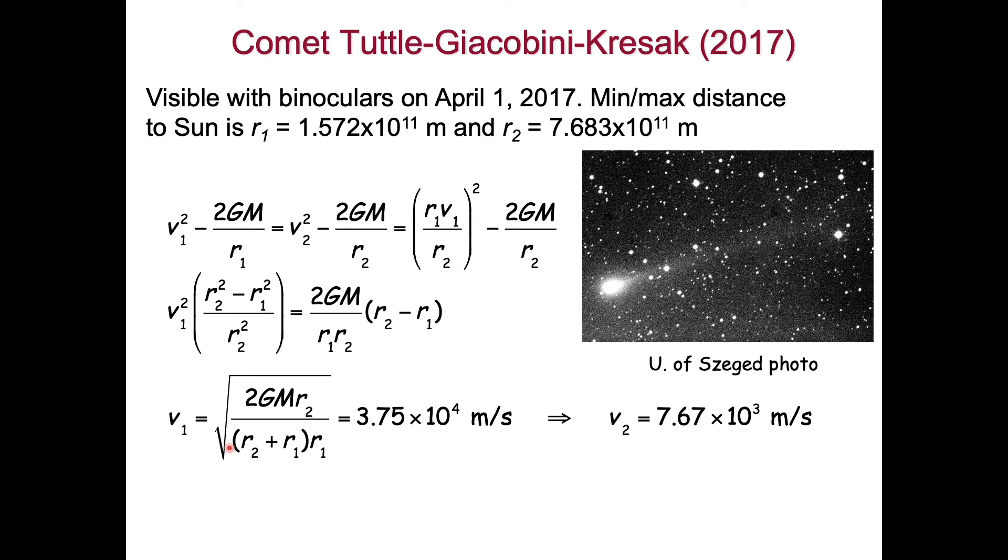If we solve for V1, we get 2GM over R1 plus R2 times R1 square root of that, and we get 3.75 times 10 to the 4th meters per second for V1. V2 we multiply by the ratio of the radii, and we get 7.67 times 10 to the 3rd meters per second. As a sanity check, it's going much faster at the point of closest approach. We can derive that A equals 4.627 times 10 to the 11th meters, and the period is 5.4 years.